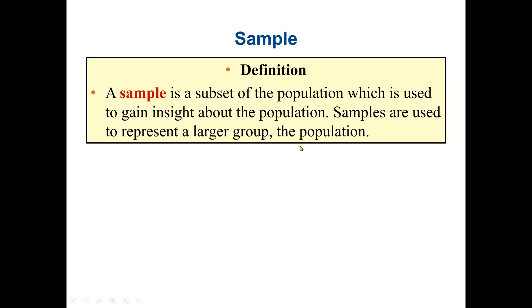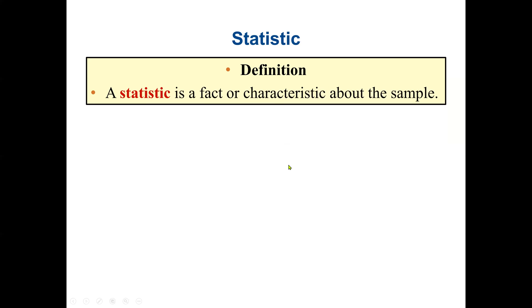So samples are normally used to represent larger groups such as the population. And this is the concept of inferential statistics. So a statistic is a fact or characteristic about a sample. The characteristics of a population, we call it parameter. The characteristics of a sample is called statistics.